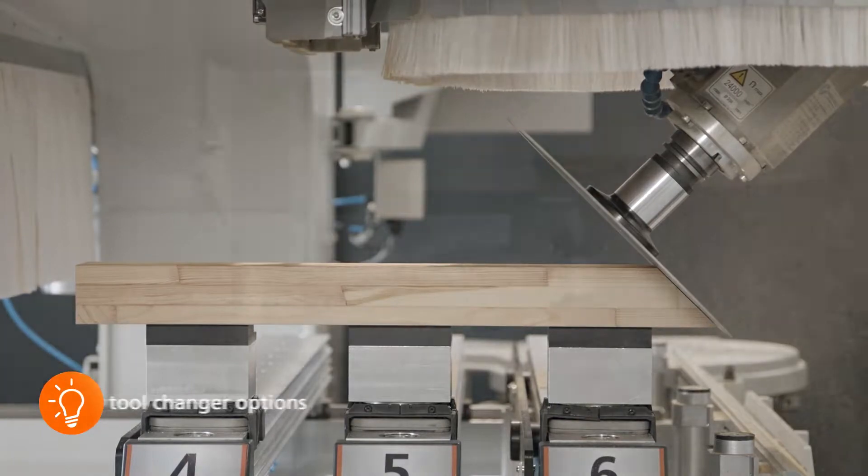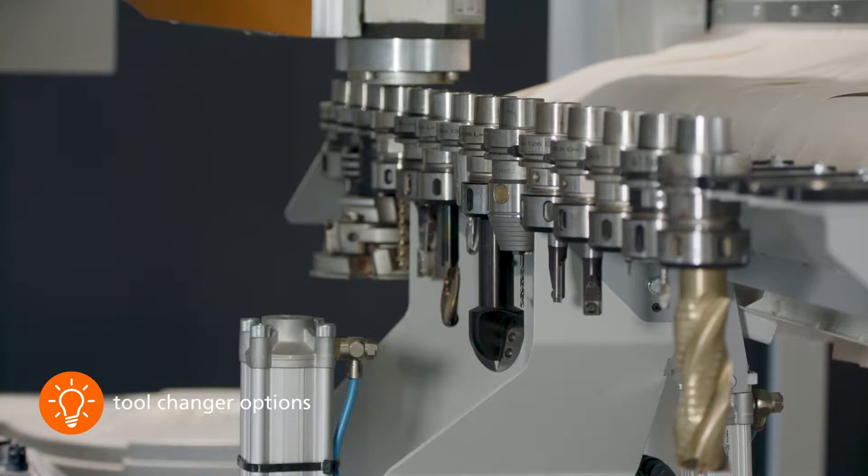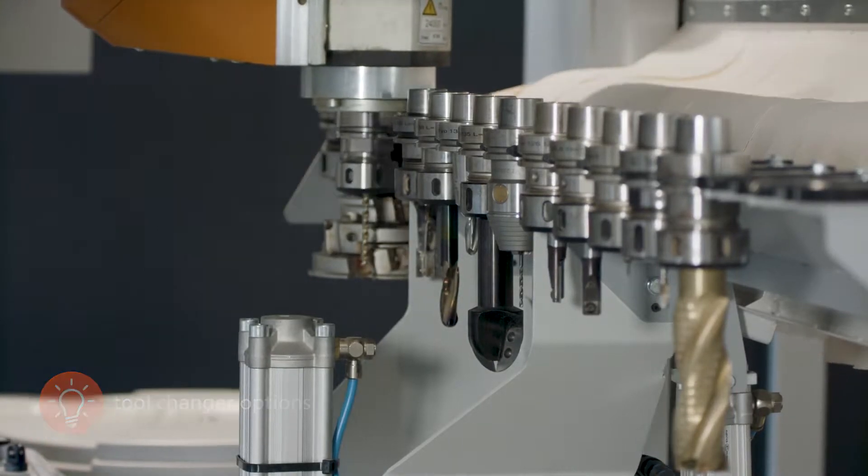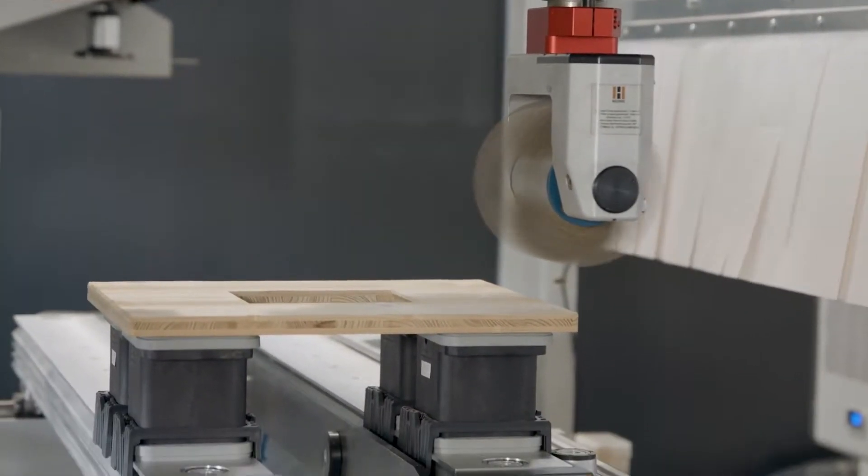Additional tool positions for saw blade diameters up to 350mm, as well as various pick-up changes, also for heavy special units, adapt the machining centre ideally to your product range.